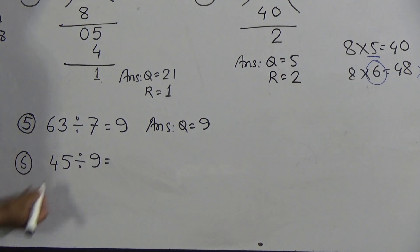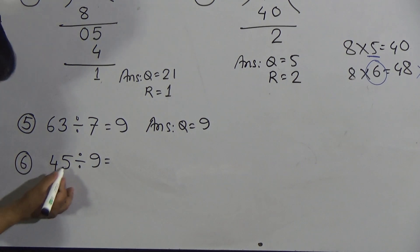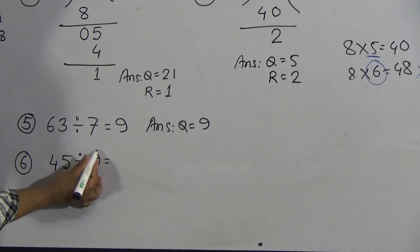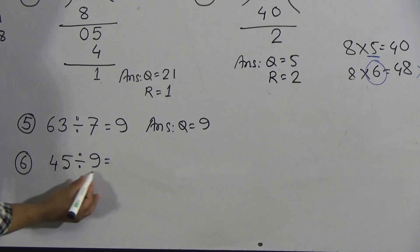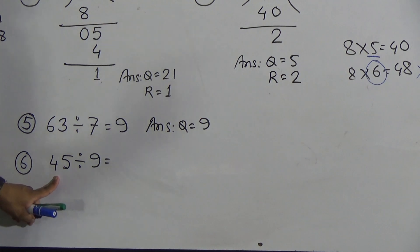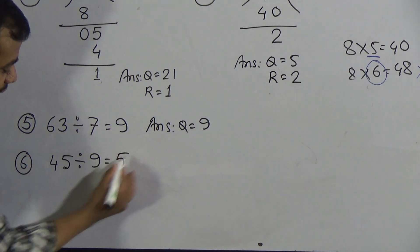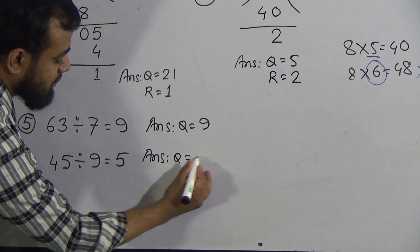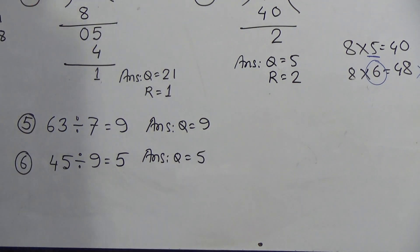Now the last question: 45 divided by 9. The dividend is 45 and the divisor is 9. Count the times table of 9: 9 ones are 9, 9 twos are 18, 9 threes are 27, 9 fours are 36, and 9 fives are 45. So 9 fives are 45. The answer is Q = 5. I hope you have understood how to divide.